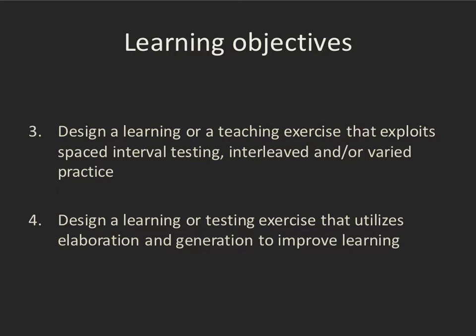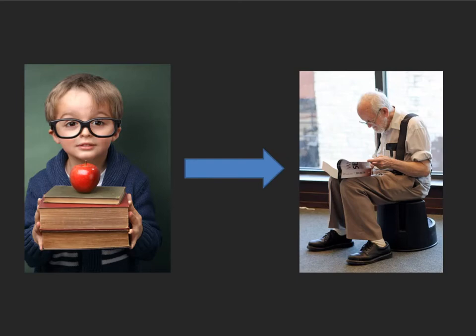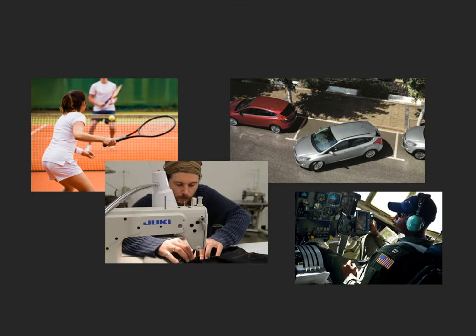Before I start talking about these various concepts related to memory and learning, I want you to know that these are not independent variables. Many times, in both learning and teaching examples, you're using multiple different concepts in the same process, even though in the research literature they often get studied independently. These concepts apply whether you're a learner or an instructor, from kindergarten learning a new skill to a retired person learning a skill for the first time. They apply not only to cognitive skills but also to sports, motor skills, and skills requiring fine motor coordination.